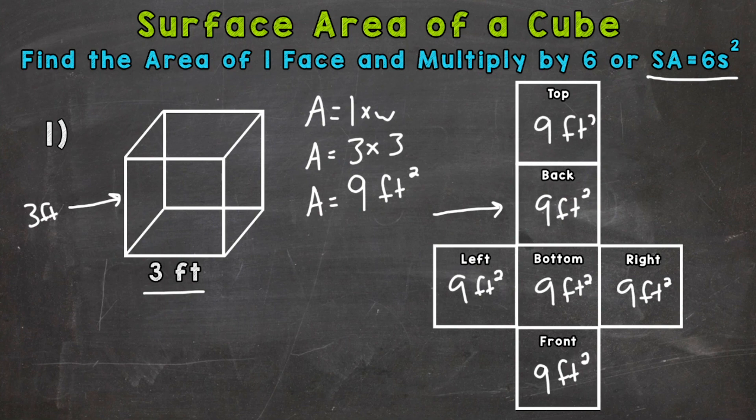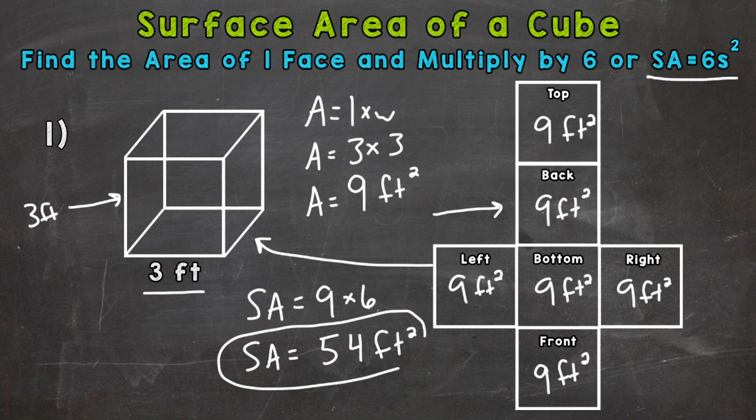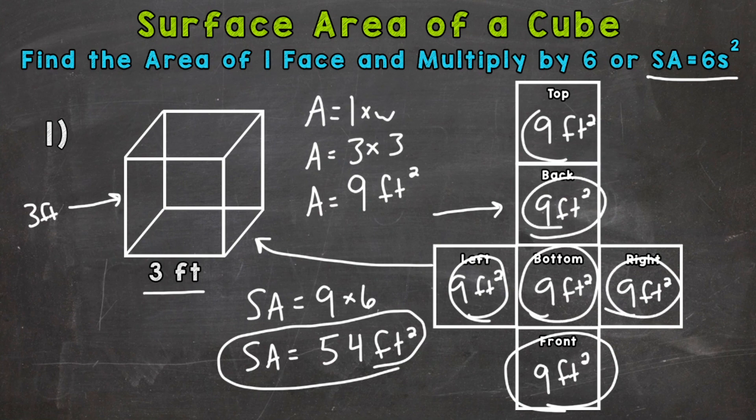So if you kind of picture folding that net up, we would just get this cube right here. So nine times six is going to give us the surface area. So we could do surface area equals nine times six, and nine times six gives us an answer of 54 square feet. So again, we found the area of one face, the front here, and we have six faces total. So we multiply that nine by six to give us the total surface area.